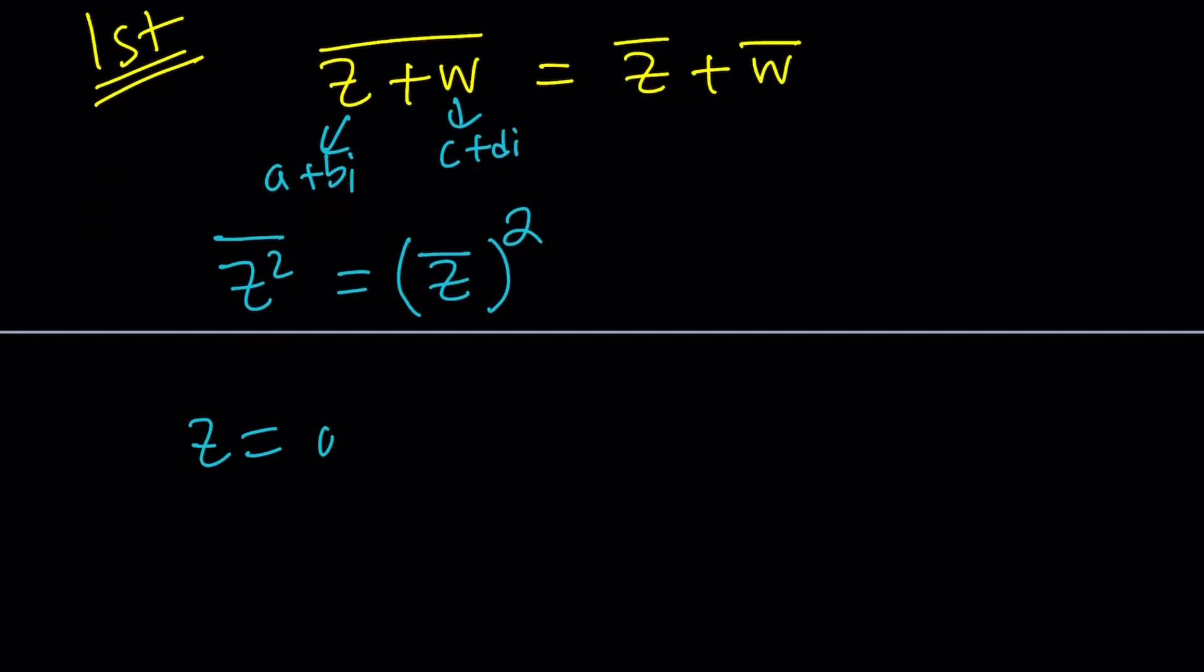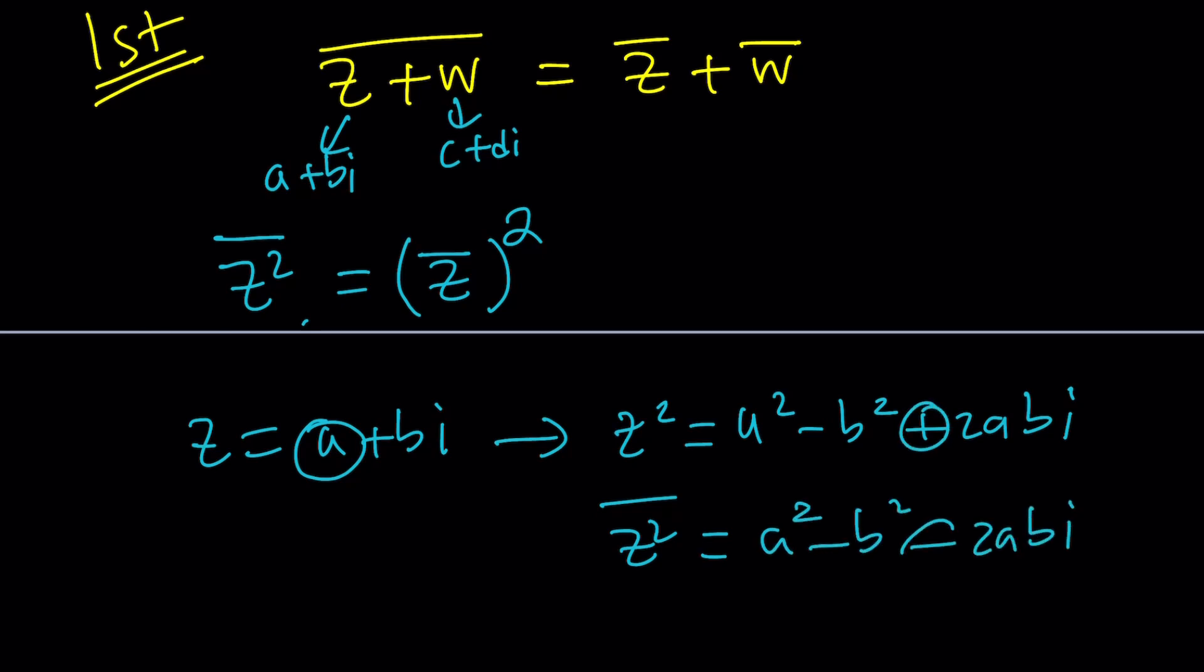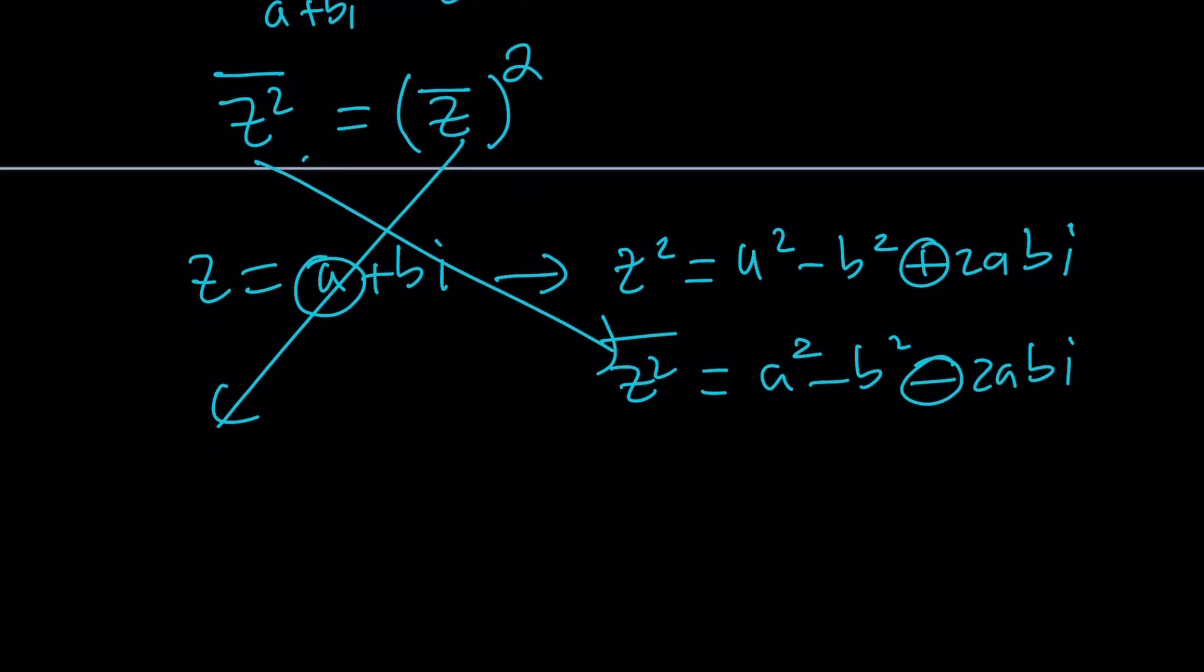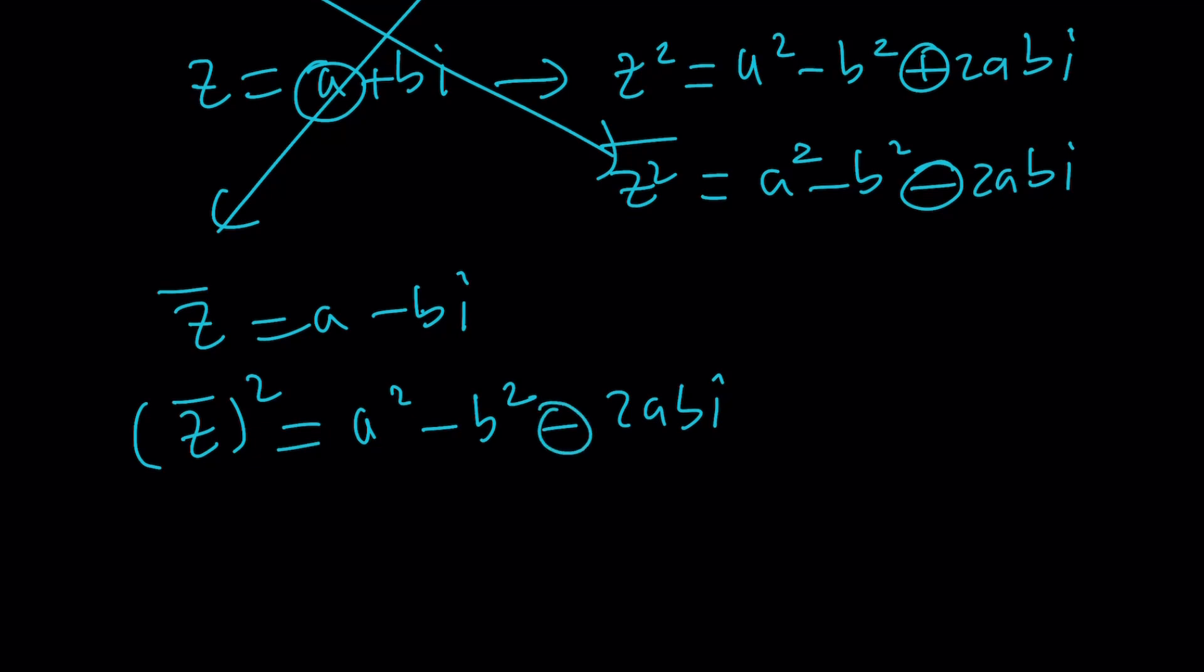If z is equal to a plus b i, I'm going to square it first. So the left hand side says square the z. That's going to give you a squared minus b squared plus 2 a b i. And then z bar, and then I have to conjugate this. So let's go ahead and conjugate it. If you conjugate z squared, you're going to get a squared minus b squared with minus 2 a b i. Of course, you have to change the imaginary part.